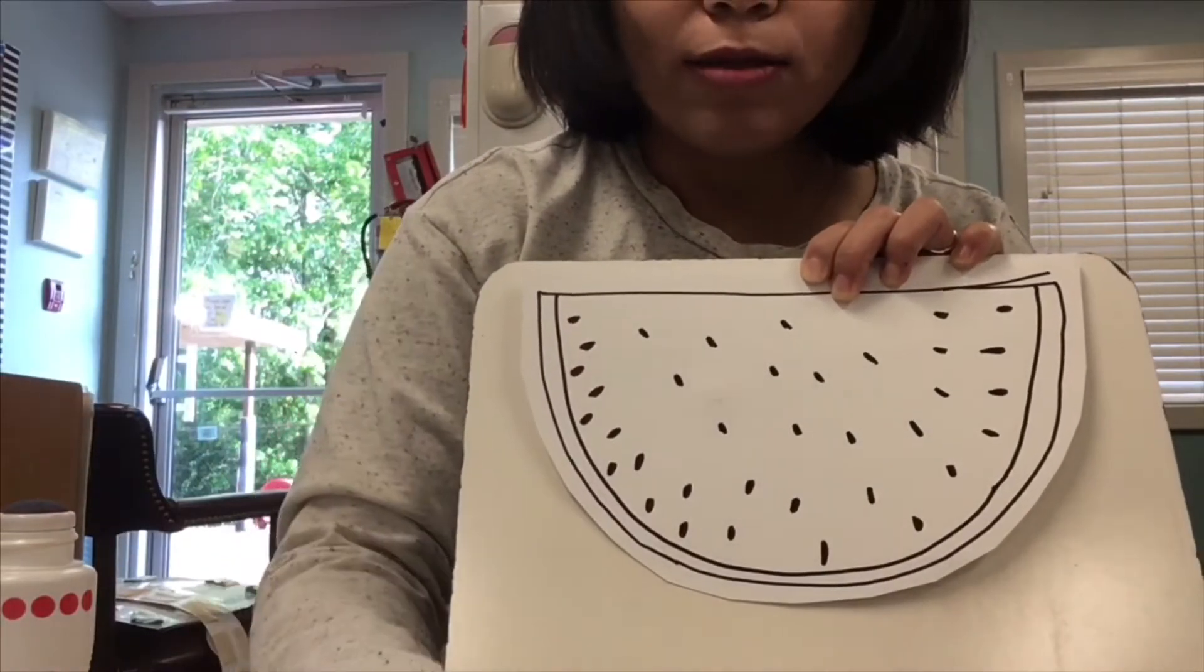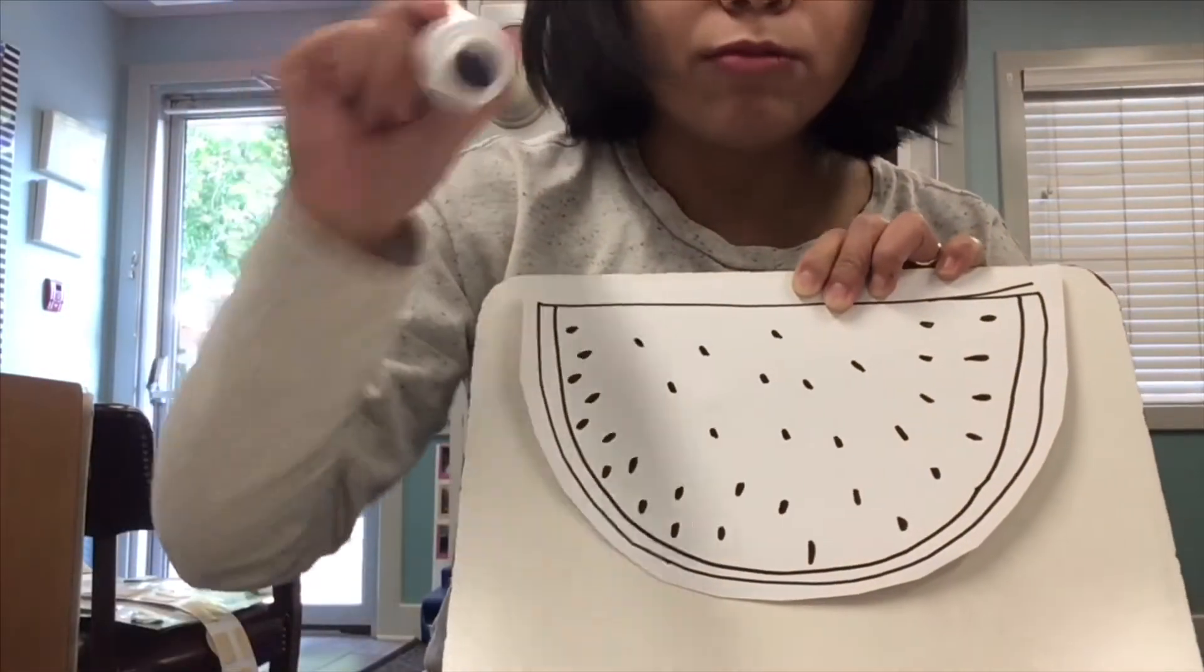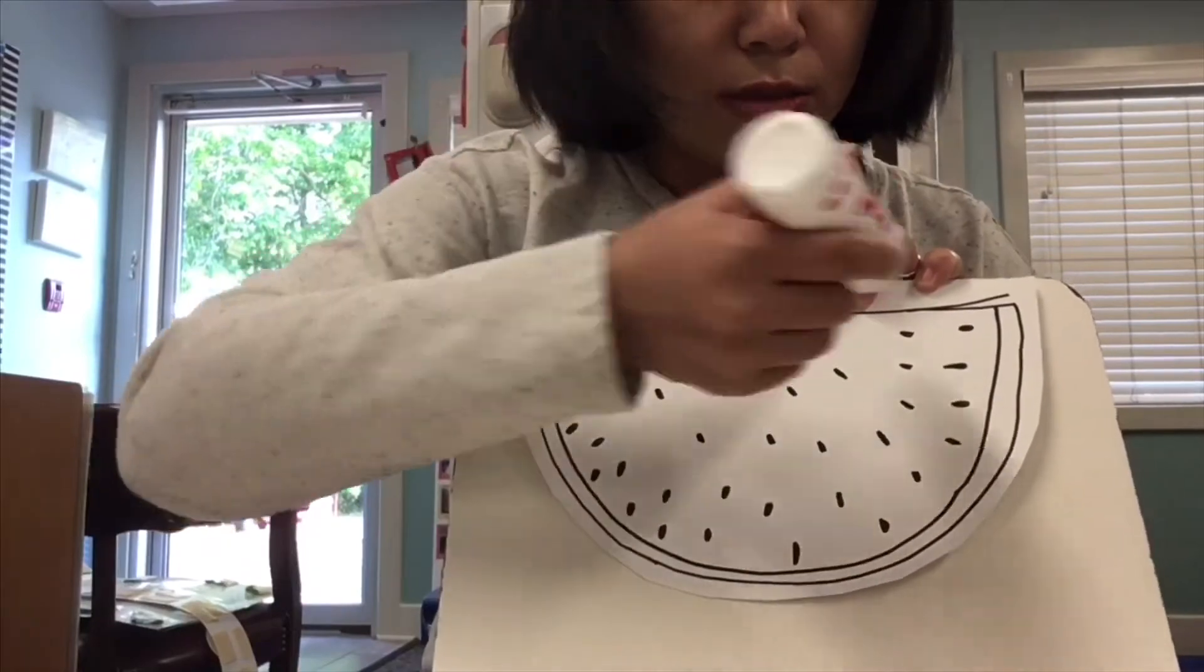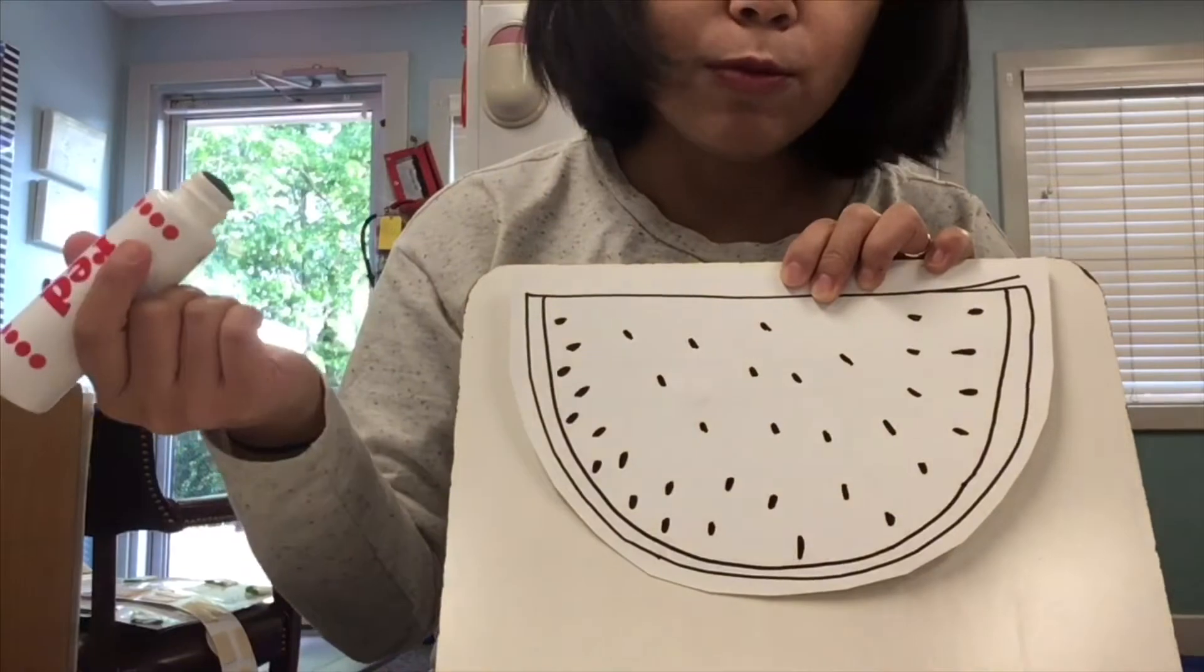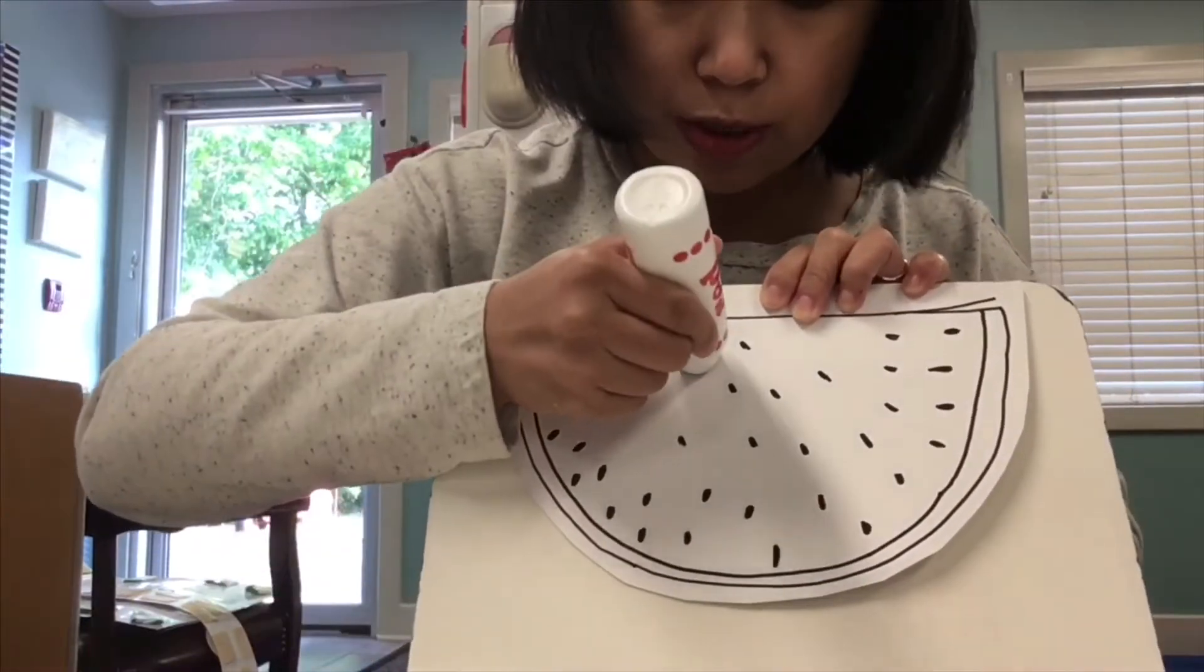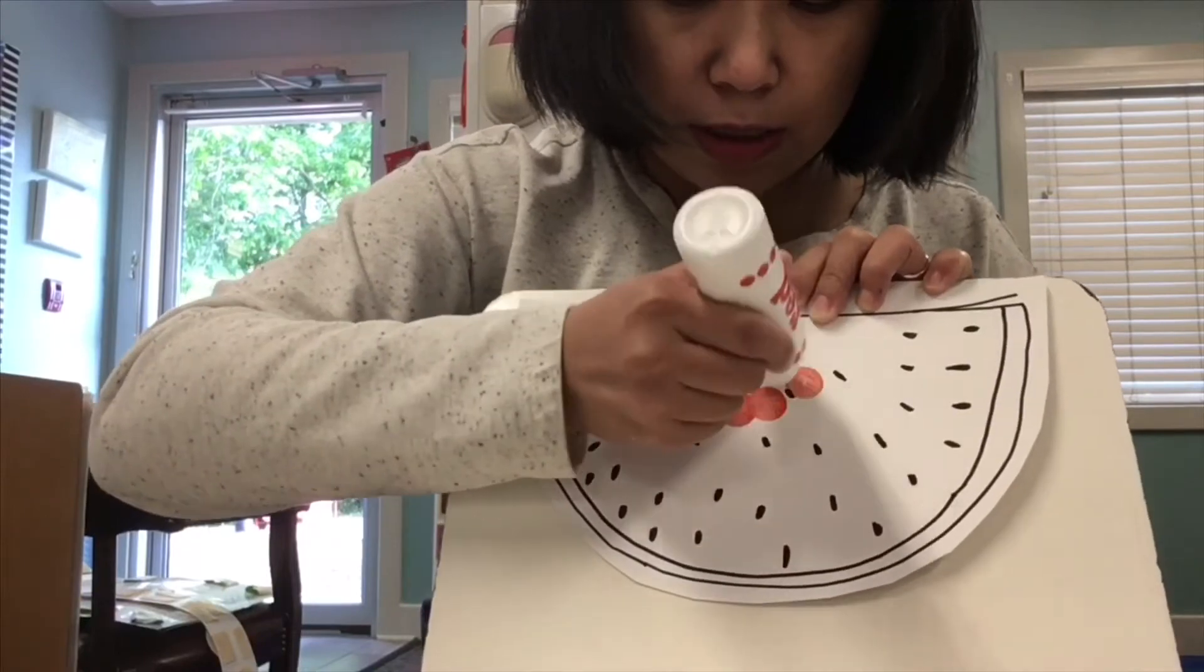Alright, now let me use dot dot to color my watermelon red. Because there are some yellow watermelon, but the most common one is red, right? So let's do some red color inside. I'm using dot dot.